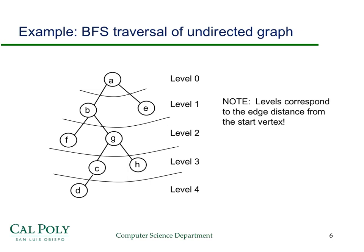Here's a picture illustrating the levels of the breadth-first search tree from the previous slide. Level 0 is A, level 1 is B and E, level 2 is F and G, level 3 is C and H, and level 4 is D. These levels correspond to the shortest edge distance from the starting vertex: B and E are one edge away, F and G are two edges away, C and H are three edges away, and D is four edges away from A.